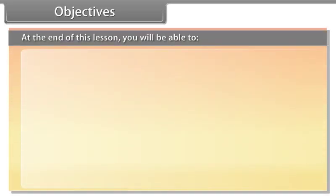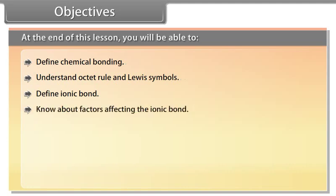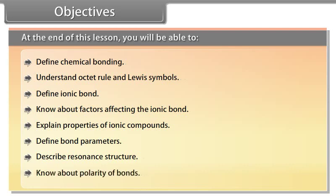At the end of this lesson, you will be able to: define chemical bonding; understand the octet rule and Lewis symbols; define ionic bond; know about the factors affecting the ionic bond; explain properties of ionic compounds; define bond parameters; describe resonance structure; and know about polarity of bonds.